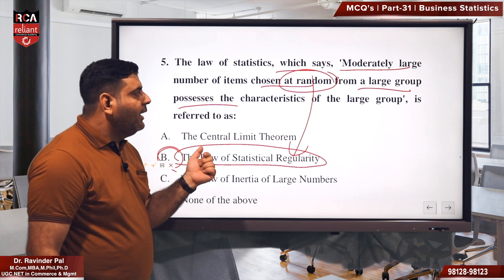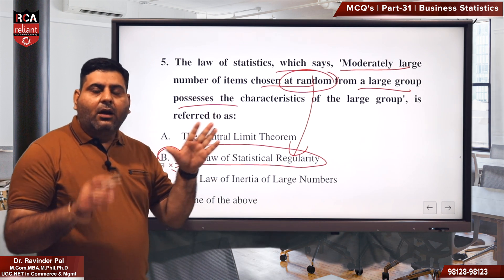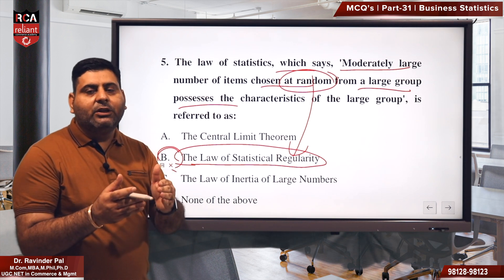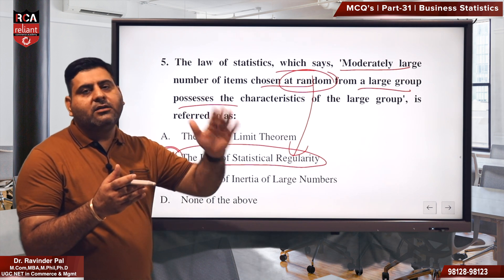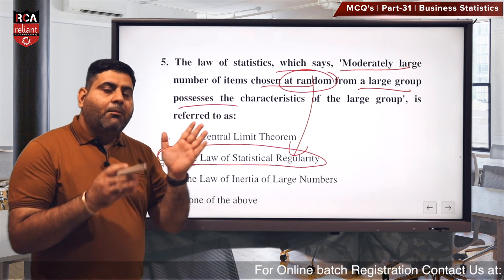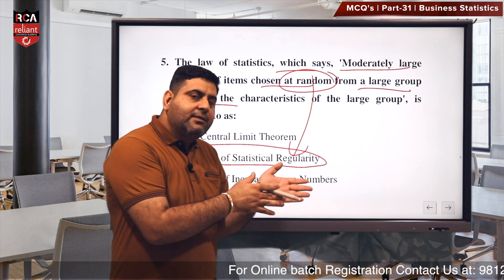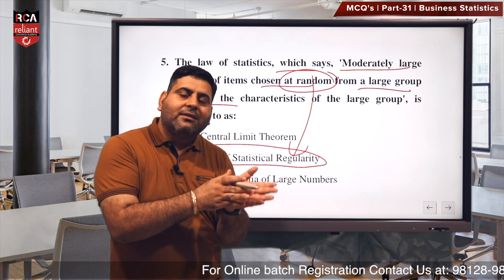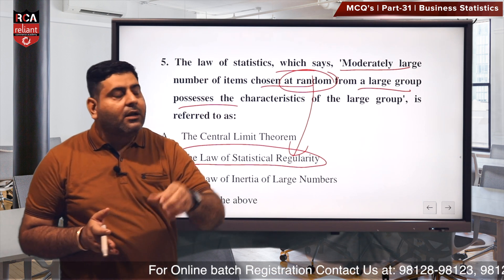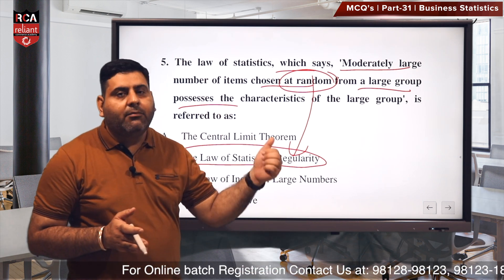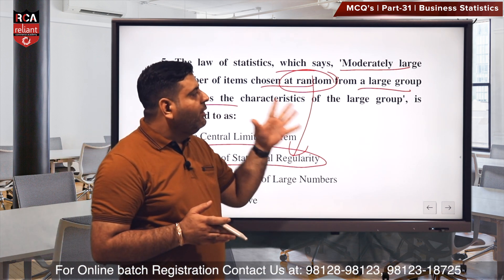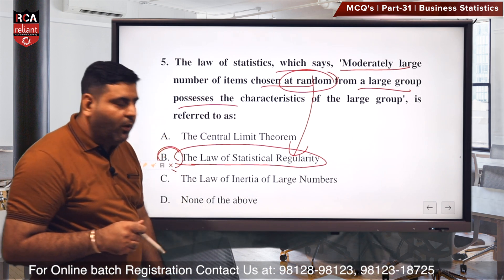The right answer is B — law of statistical regularity. The law of large numbers simply says: increase the sample size, increase N. But increasing sample size alone does not bring normality. One more thing is needed — statistical regularity — which means the sample should be taken at random, at regular intervals. When both conditions are met, our sample will be perfect.